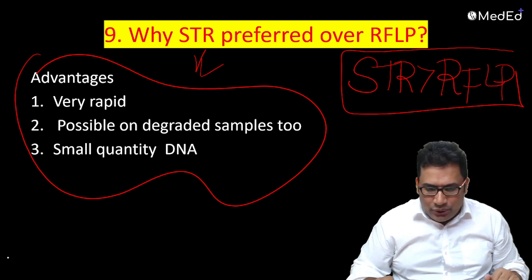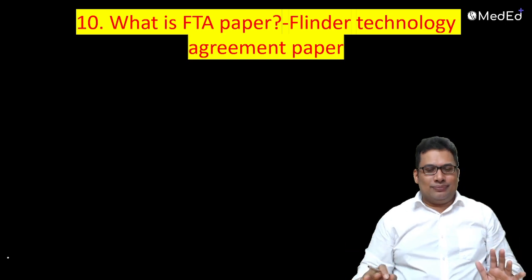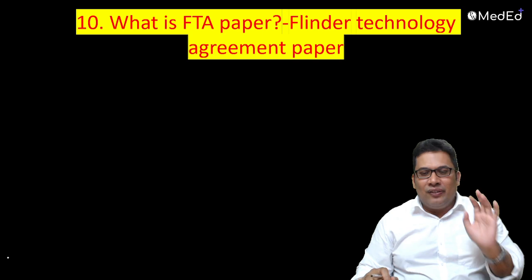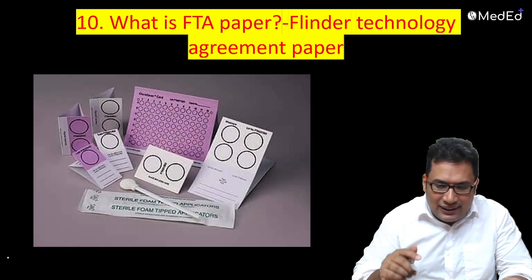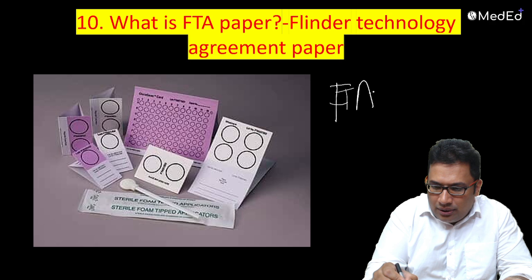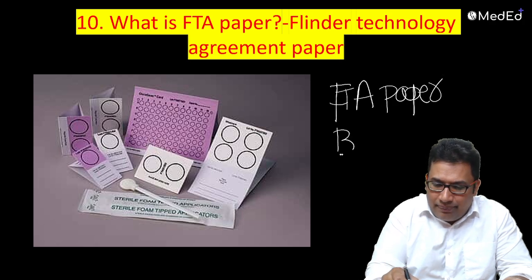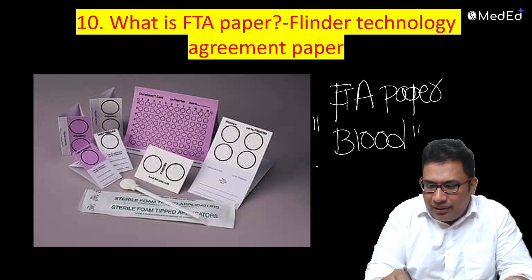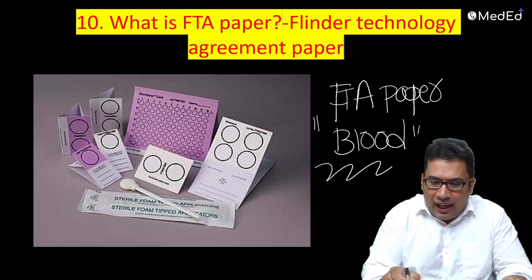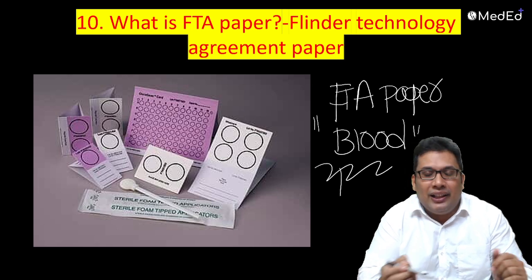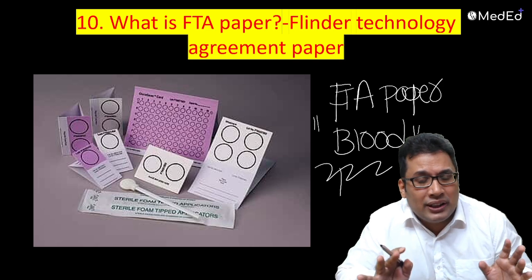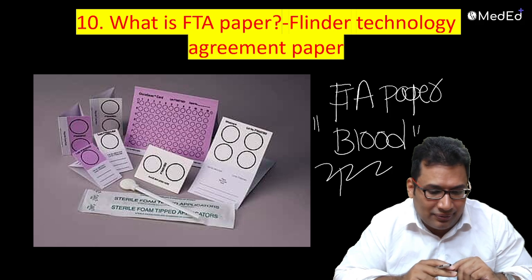One more question that can be asked: what is FTA paper? FTA paper stands for Flinders Technology Associates paper. Blood samples can be collected on this paper and preserved for 6 to 8 years, for many years. Nowadays it is very commonly used in forensic science and crime investigation. So that completes this small exercise on DNA analysis. If you have any doubts you can message me in the comment section. Thank you and wish you all the best.